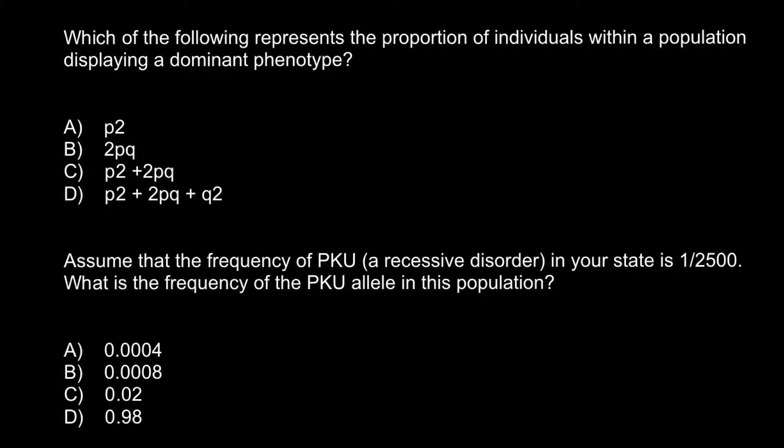And here is the first question: which of the following represents the proportion of individuals within a population displaying a dominant phenotype? And here we have four answers to choose from.